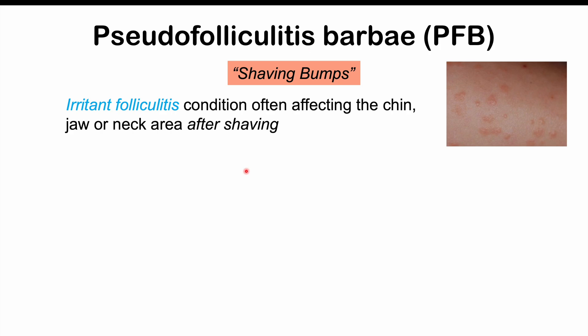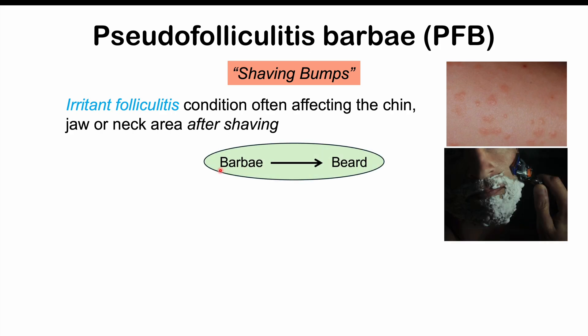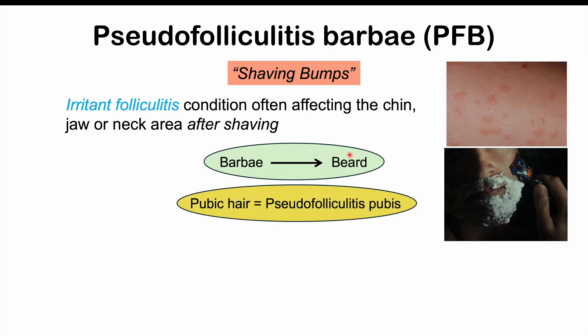We call it barbae because it refers to the beard. We can see this more clearly by looking at some of the romance languages: in French, the word for beard is barbe, and in Spanish, it is barba. If we have pseudofolliculitis in the pubic area from shaving pubic hair, this can lead to a condition known as pseudofolliculitis pubis — a separate but similar condition due to shaving.